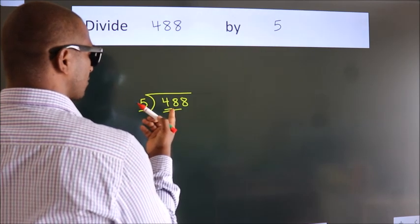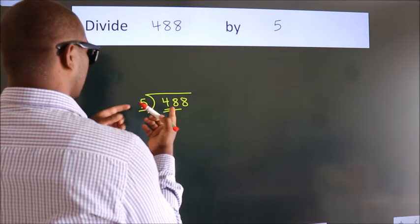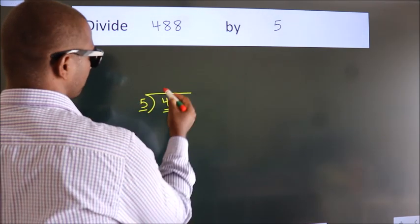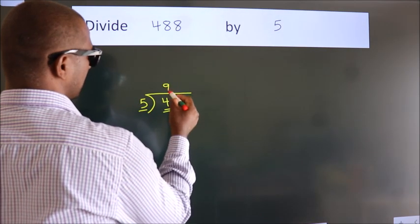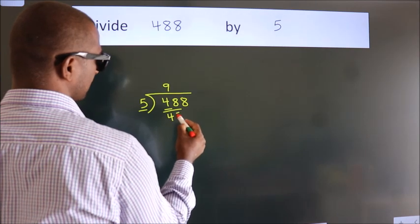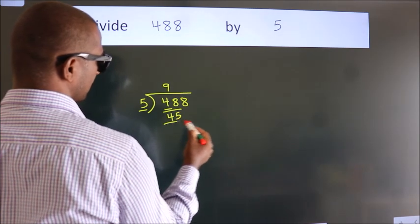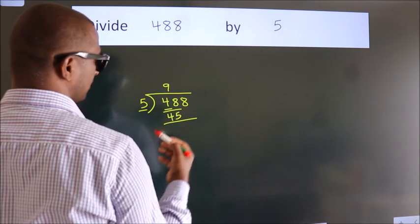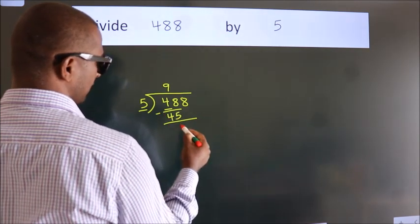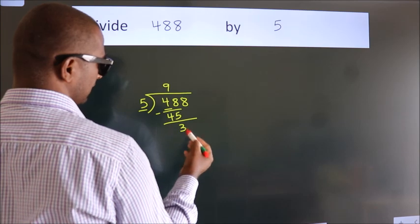A number close to 48 in the 5 times table is 5 nines, 45. Now we should subtract. We get 3.